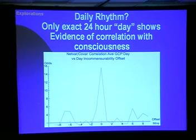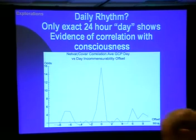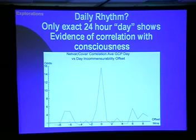So if there is consciousness driving what our system does, one might ask what happens if people are awake versus asleep. We might imagine there's a little more tendency while people are awake. What this shows is, in the center, a real 24-hour day compared with days that are minutes longer or minutes shorter — there's a pretty impressive spike. It's actually only 16 to 1 odds, but it suggests that there really is a kind of consciousness pressure on the data when people are awake.